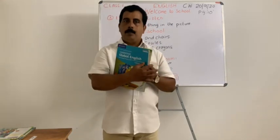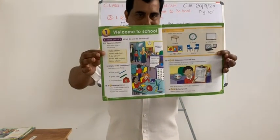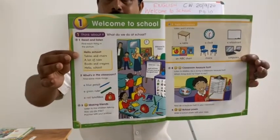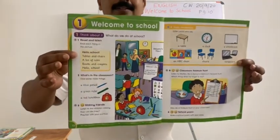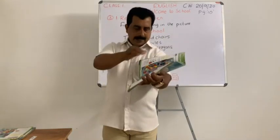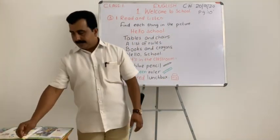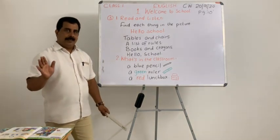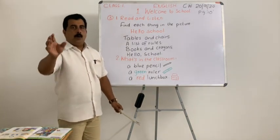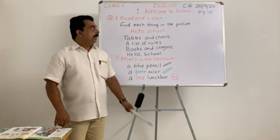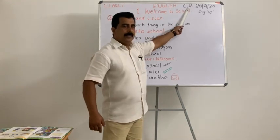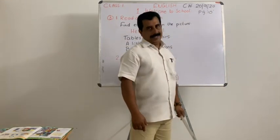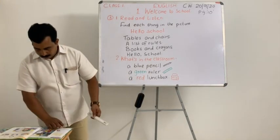You can open and see — there are many pictures in it. Cambridge Global English Learners Book. Have you taken your book? Don't forget to take a pencil also. Open page number 10. Write CW — class work — and today's date: 29, 2020.